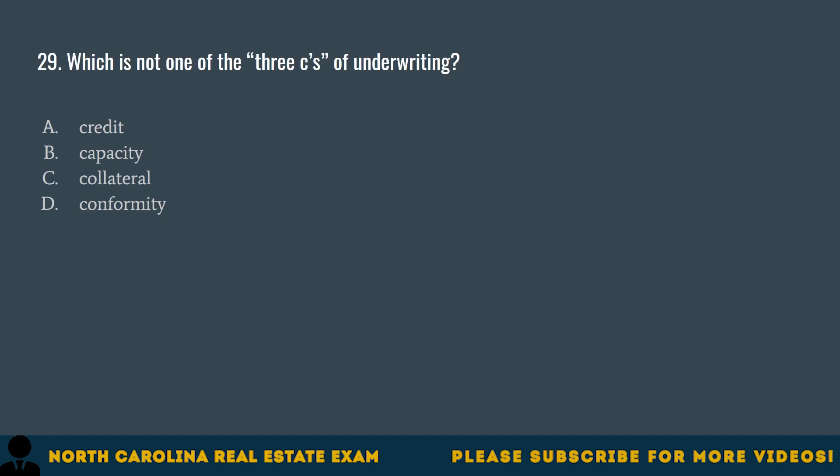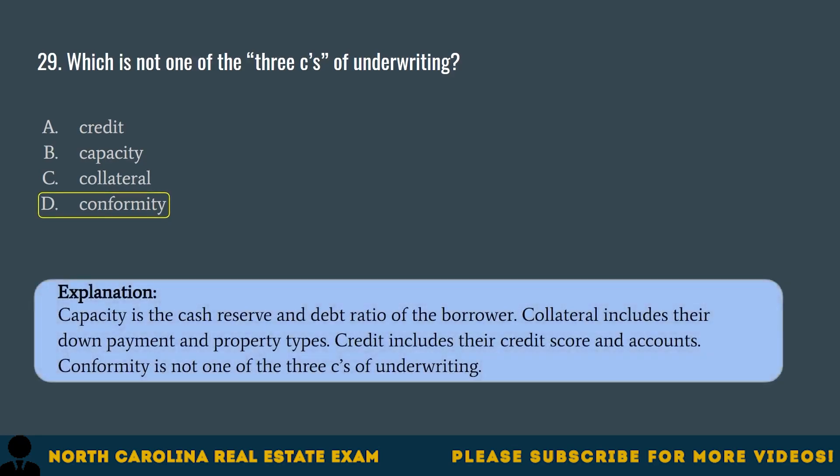Question 29. Which is not one of the three C's of underwriting? A. Credit. B. Capacity. C. Collateral. D. Conformity. The correct answer is D. Conformity. Capacity is the cash reserve and debt ratio of the borrower. Collateral includes their down payment and property types. Credit includes their credit score and accounts. Conformity is not one of the three C's of underwriting.